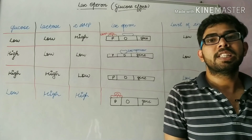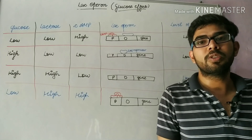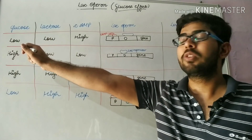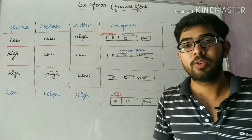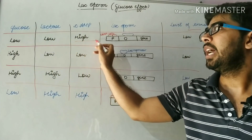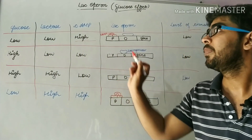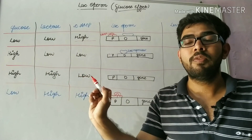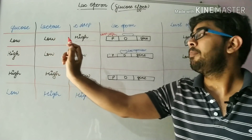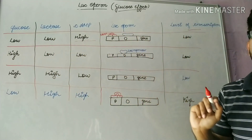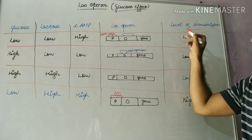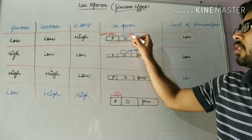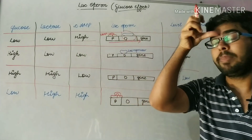I will tell you different cases in which concentrations of lactose and glucose differ, and what effect occurs on lac operon gene expression. The first case is when glucose concentration is low and lactose concentration is also low. When glucose concentration is low, there will be high concentration of cyclic adenosine monophosphate. However, low concentration of lactose leads to activation of the repressor, which binds to the operator region. Therefore, there will be low expression of the lac operon gene because RNA polymerase cannot proceed past the operator.